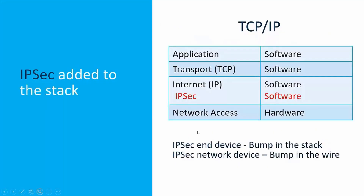IPsec can be implemented in the kernel of the operating system or it can be added to the stack. You have the application layer, which is in software; the transport layer, where we have TCP and UDP, that's in software; and the internet layer, or IP layer, which also exists in software. IPsec is added at the internet or IP layer and is implemented in software, in comparison to the network access layer, where we have the data link layer and the physical layer, which is implemented in hardware.